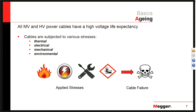Thermal stress can come from overloading the cable, pushing too much current through it. Electrical stress can come from over-voltaging the cable or regions of high voltage stress. Mechanical stress can come from nicks and scratches in the jacket during installation, or from over-bending the cable — when the cable is returned to straight, sometimes you get air bubbles and the layers delaminate, creating a cable failure. Environmental stress typically involves wet conditions that contribute to reduced cable life.